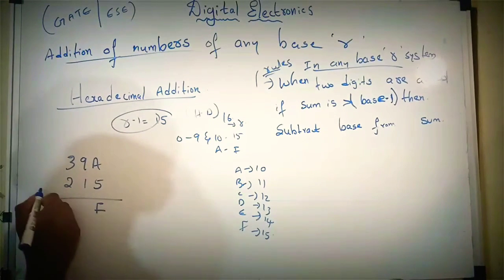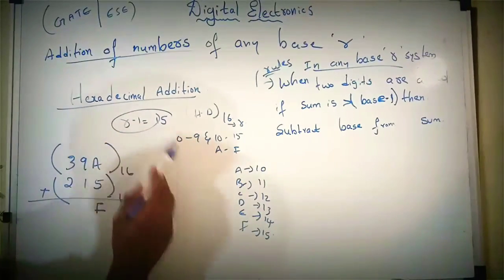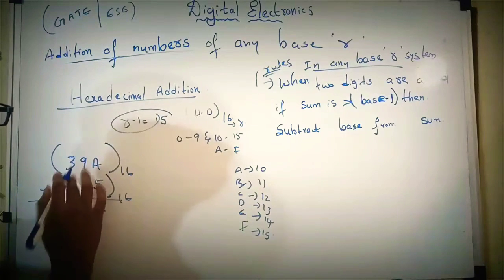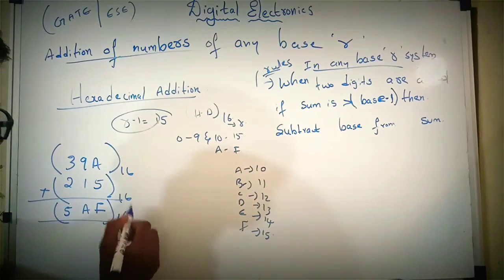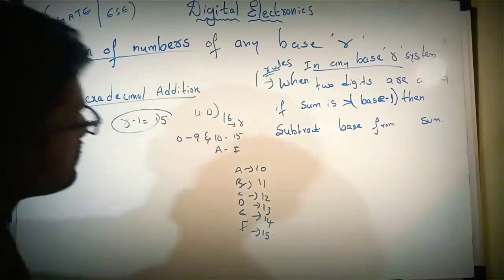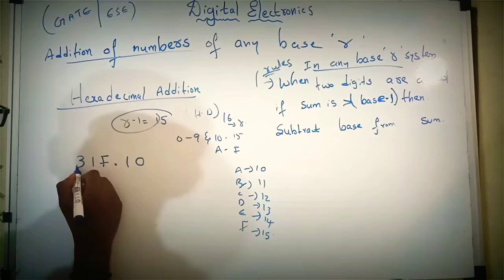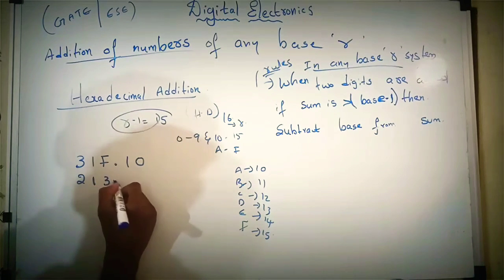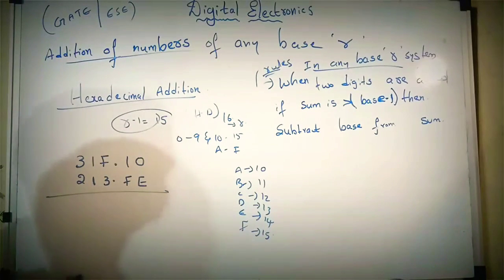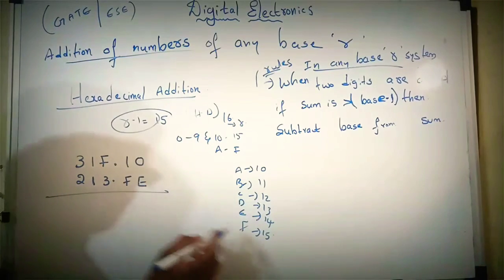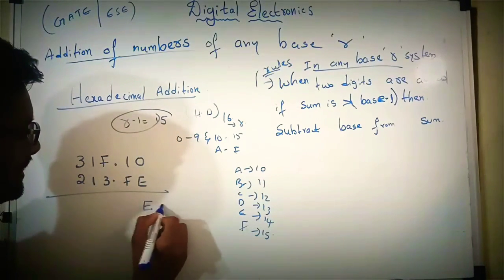15 is nothing but F in hexadecimal. 9 plus 1 is 10. 10 is not greater than 15, so the value of 10 is A. 3 plus 2 is 5, and 5 is not greater than 15. So simply this is the hexadecimal equivalent value. Let's take another number: 3 1 F and 1 0 2 1 3. F is 15, E is 14. 14 plus 0 is 14, which is not greater than 15, so simply write the value of 14 as E. Next, 1 plus F.